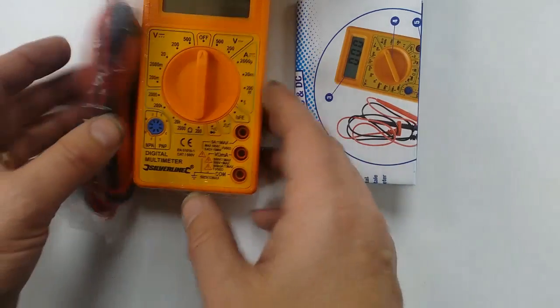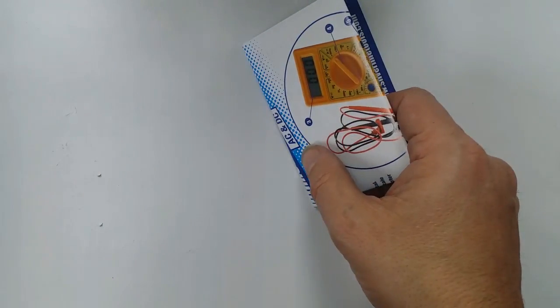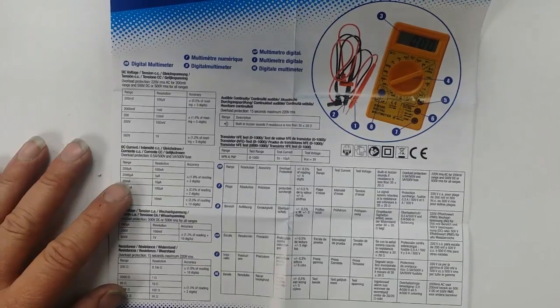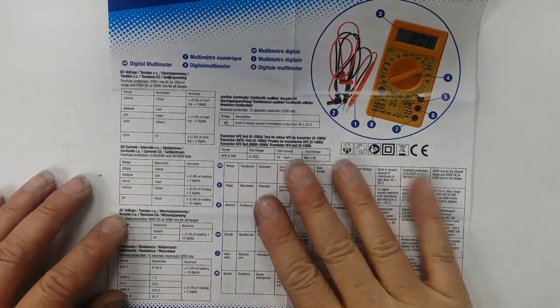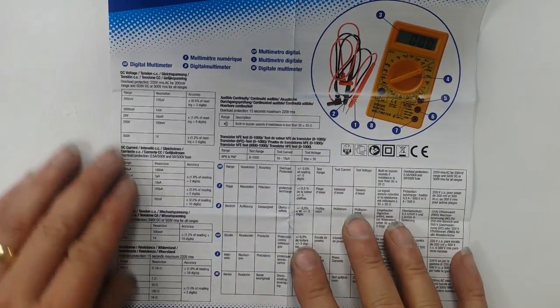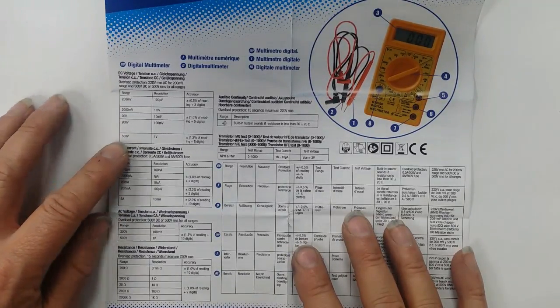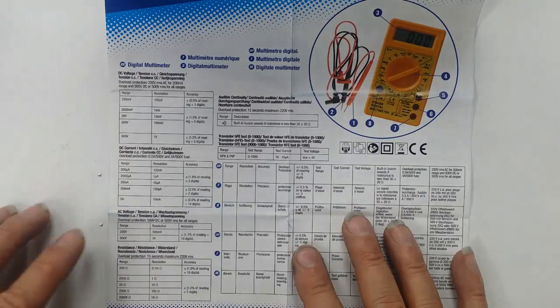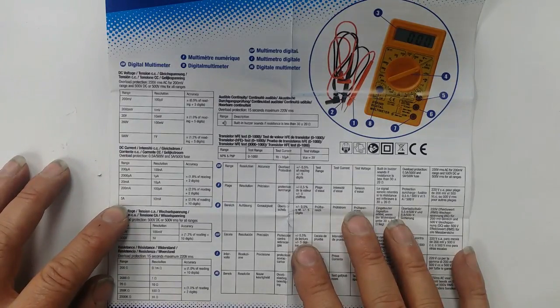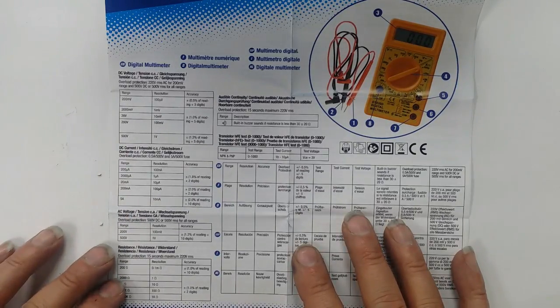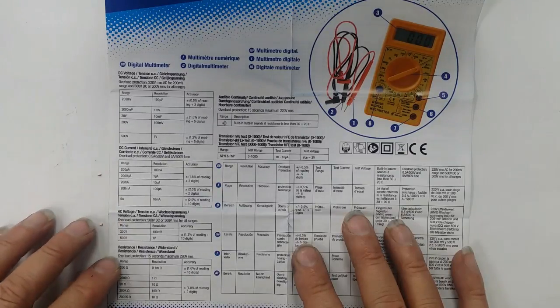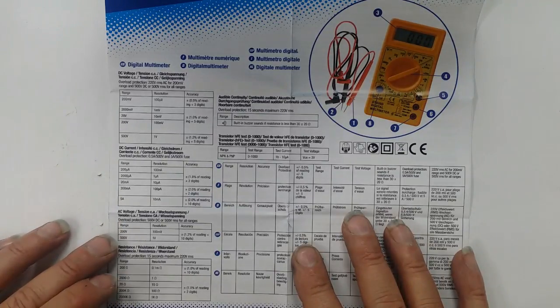Alright, let's have a quick look at the instructions and see what it's quoting. Okay, we have the instructions out. It seems to do DC voltages up to 500 volts, current up to 5 amps DC, AC voltage up to 500 volts.